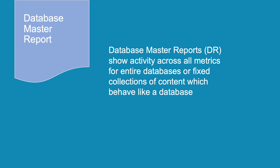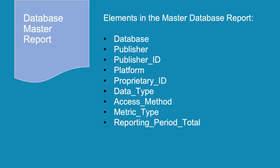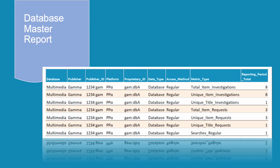Database Master Reports (DR) show activity across all metrics for entire databases or fixed collections of content which behave like a database. DRs are less compact than PRs, with nine columns across plus monthly breakdowns. In addition to the columns in the PR, the DR shows the database name within the platform and the publisher details. The elements in the DR are database, publisher, publisher ID, platform, proprietary ID, data type, access method, metric type, and reporting period total. In this example, a DR has been generated for the multimedia database on publisher Platform Alpha, covering 1st January to 30th June 2017. Users from Sample University investigated eight items in the database and requested the full record for three of those items.